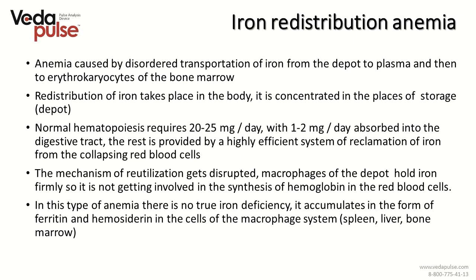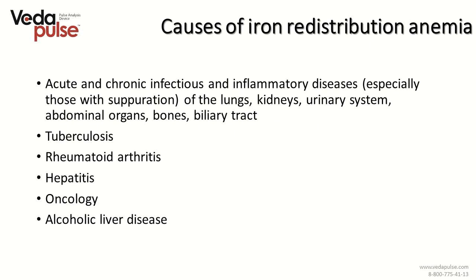For normal hematopoiesis we need about 25 mg of iron per day, but only 1 to 2 mg is absorbed with food daily. The lack of iron is compensated by re-utilization of iron from old erythrocytes with the help of macrophage cells in kidneys and spleen. In this type of anemia, macrophages do not give iron from old red blood cells to new ones. Reasons for the disruption of iron re-utilization include acute and chronic infections and inflammatory diseases — inflammatory diseases of the lungs, kidneys, urinary system, abdominal organs, bones, biliary tract, tuberculosis, rheumatoid arthritis, hepatitis, oncology and alcoholic liver disease.